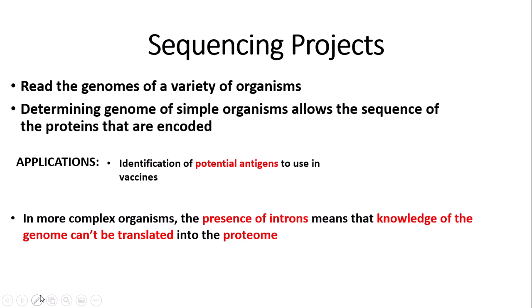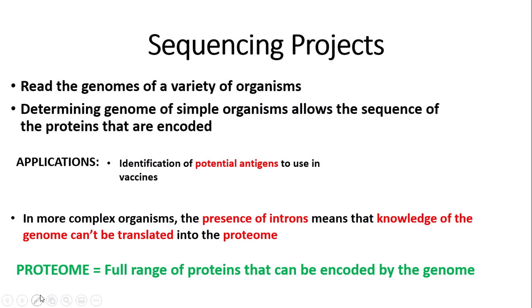In more complex organisms — humans, for example — the presence of introns or non-coding DNA means that knowledge of the genome can't be translated into the proteome, the proteome being the full range of proteins that can be encoded by the genome. So from complex organisms that contain introns, the properties of the proteome can't be directly read from the genome, as introns are present which don't code for amino acids.